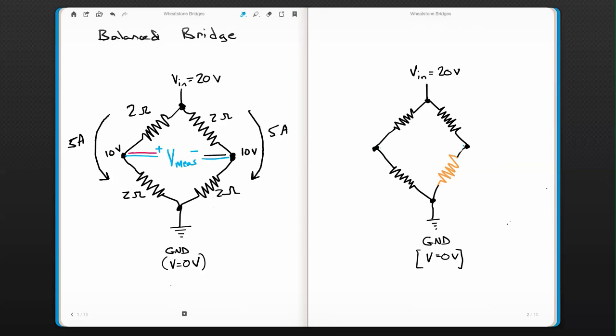So my V measured, V sub measure equals zero volts.